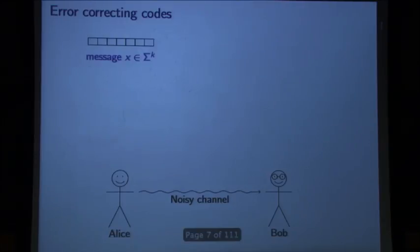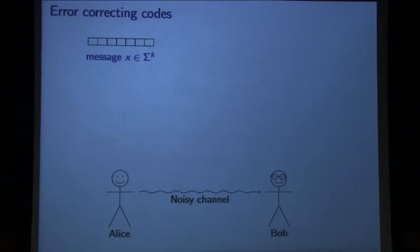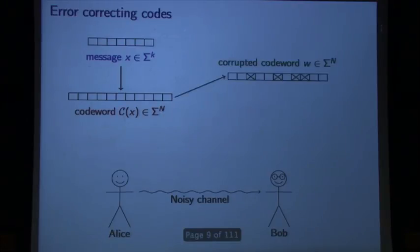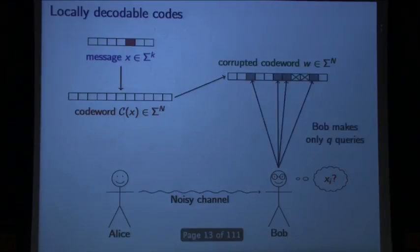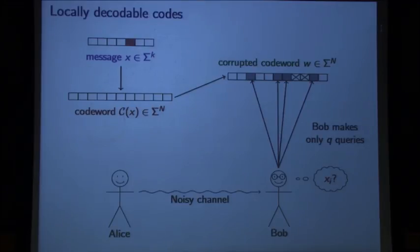Here's the basic framework for error correction. A message will always be X, the symbols will be from some alphabet capital Sigma. In traditional error correcting, you encode your message as a code word, and Bob wants to recover the message from the corrupted code word. Locally decodable codes change this so that instead of wanting the whole message, Bob now just wants a single symbol of the message, and he should be able to do this by making q queries to the corrupted code word.